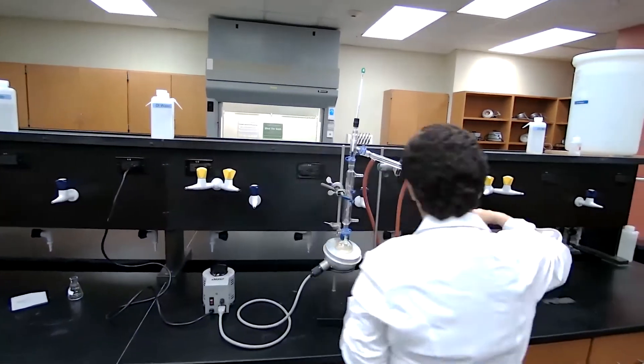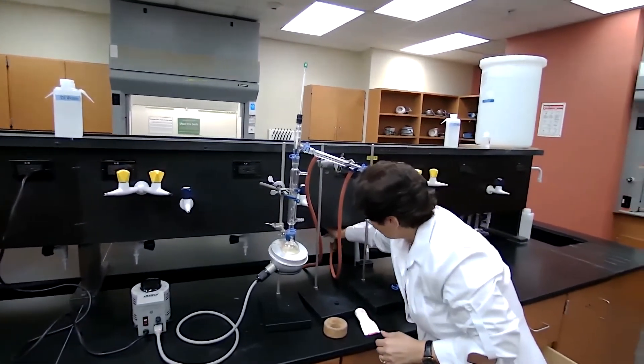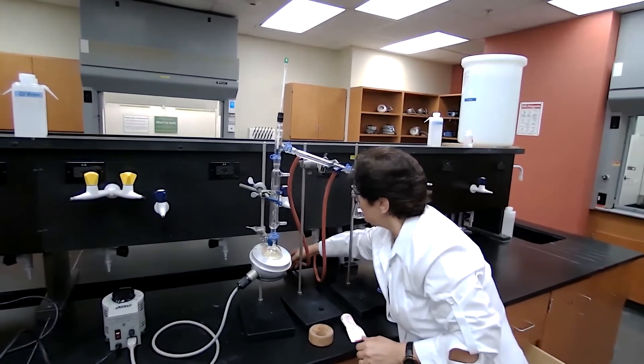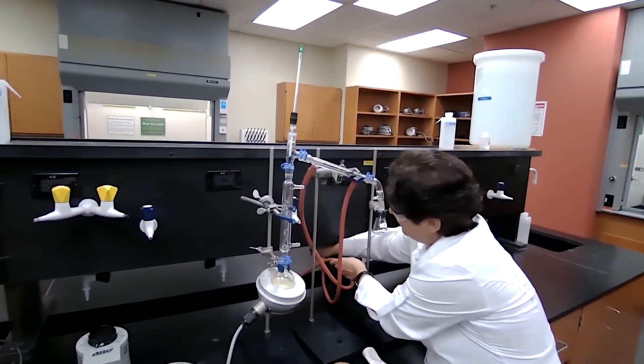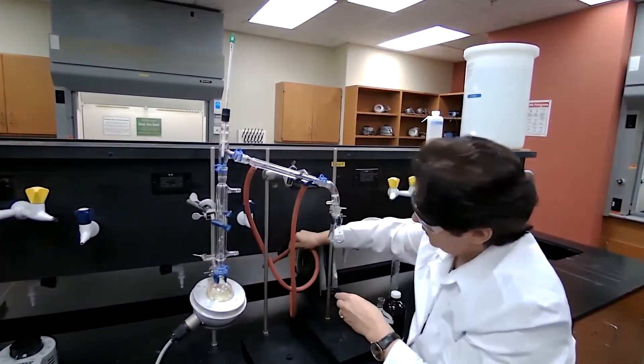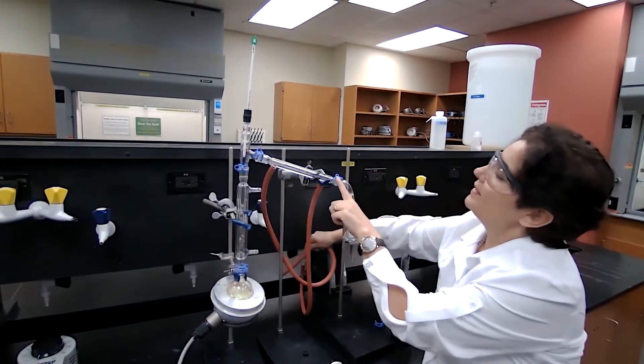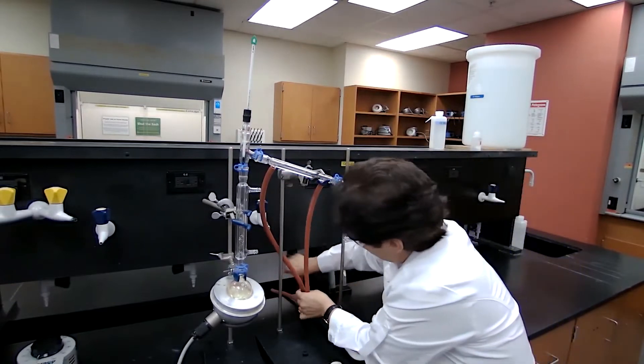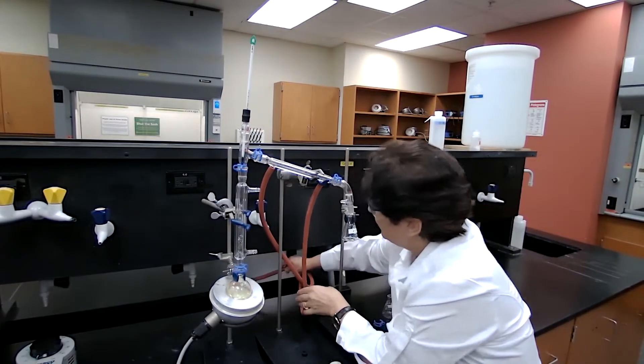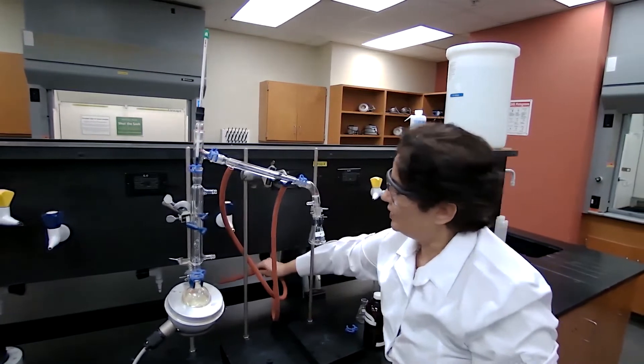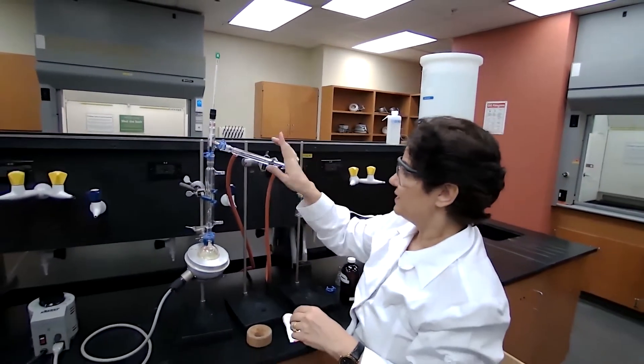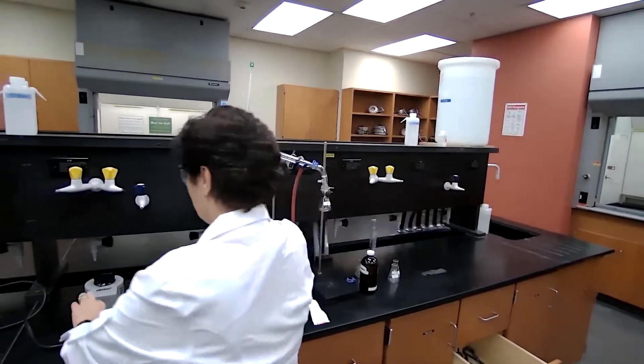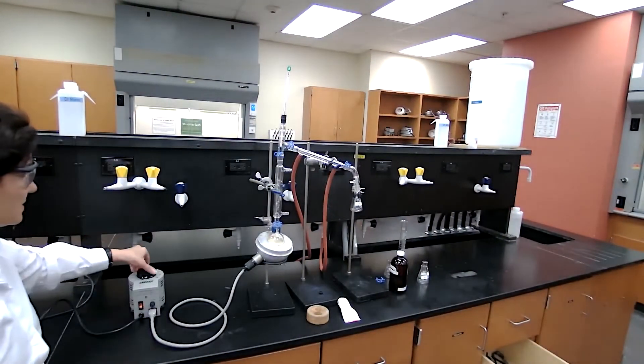We always turn on the water. Turn on the water gently. You want to see the water flow. Condenser is filled up with water and there is a low flow of water. Turn on the water first. Turn on the heat second. Turn on the heat.